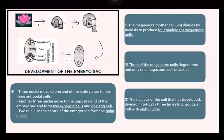The development of the embryo sac: The megaspore mother cell divides by meiosis to produce four haploid megaspore cells. Then, three of the megaspore cells degenerate and only one megaspore cell develops.